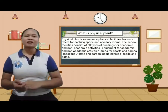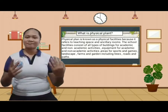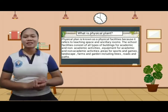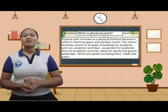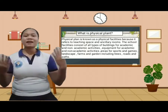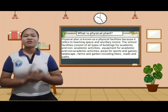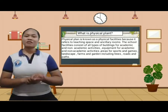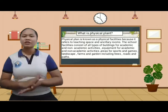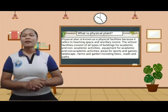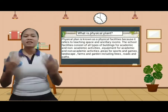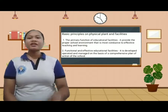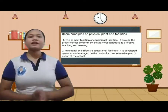Physical plant refers to the physical properties of a school, consisting of the grounds, the various facilities within the school grounds, and inside the school buildings. To beautify the school site with ornamental plants requires the prior preparation of a planting plan, including the size and spacing of a school design and patterns. There are two basic principles on physical plant and facilities.